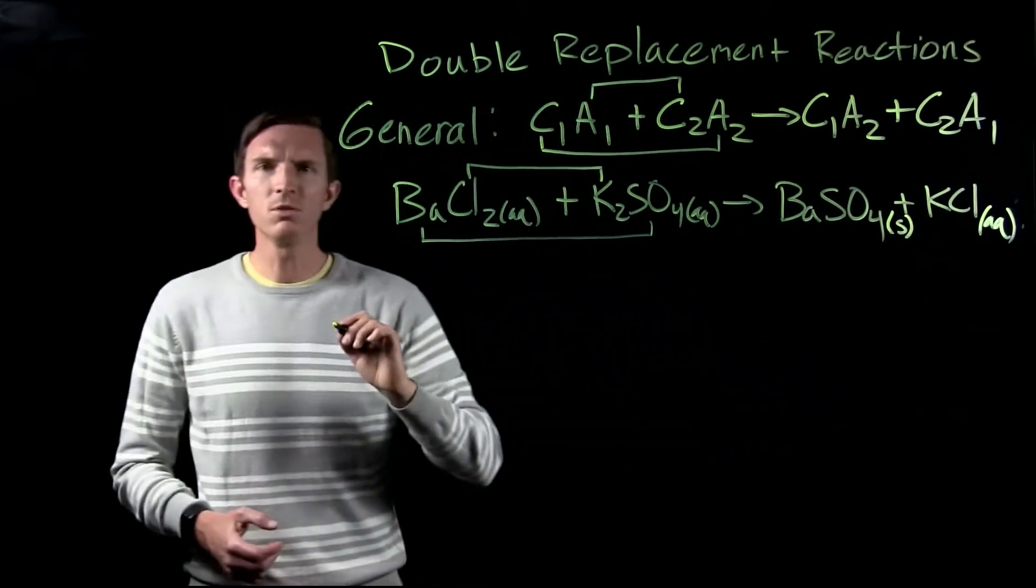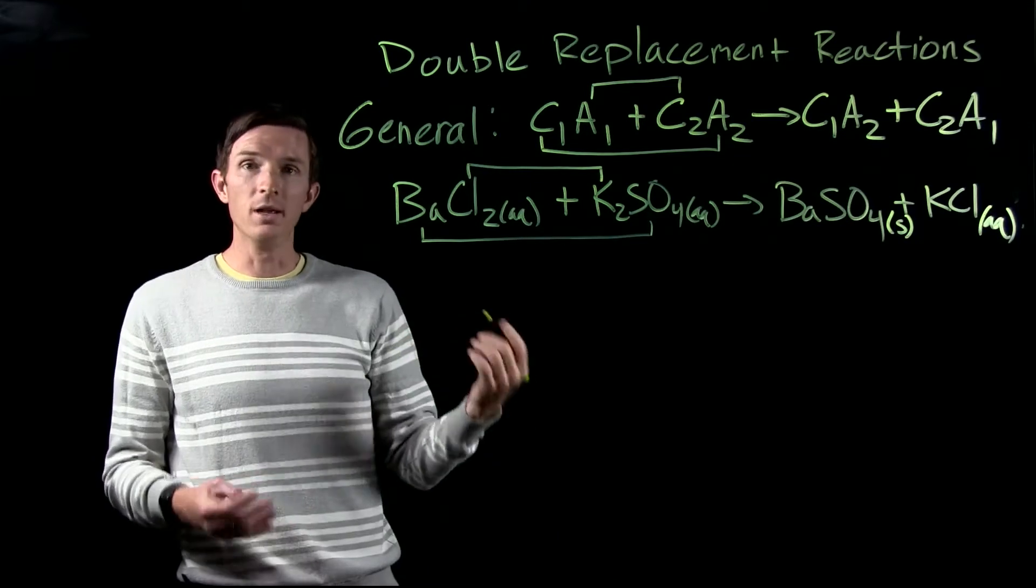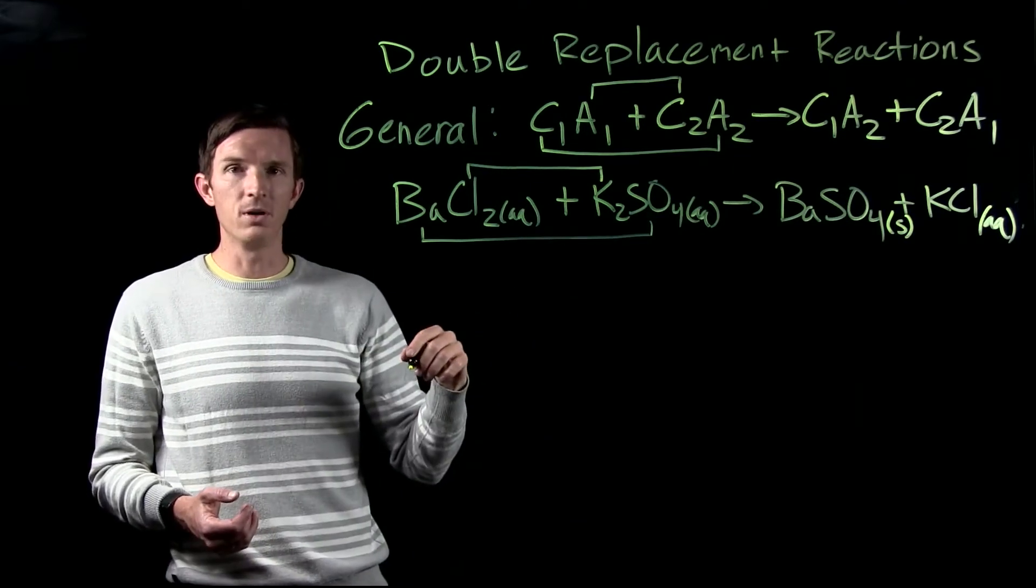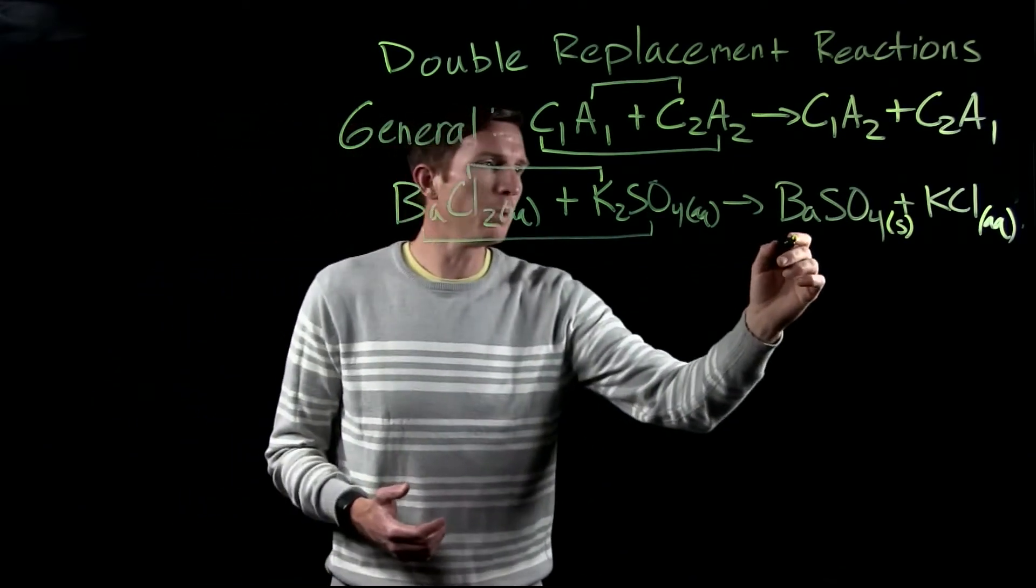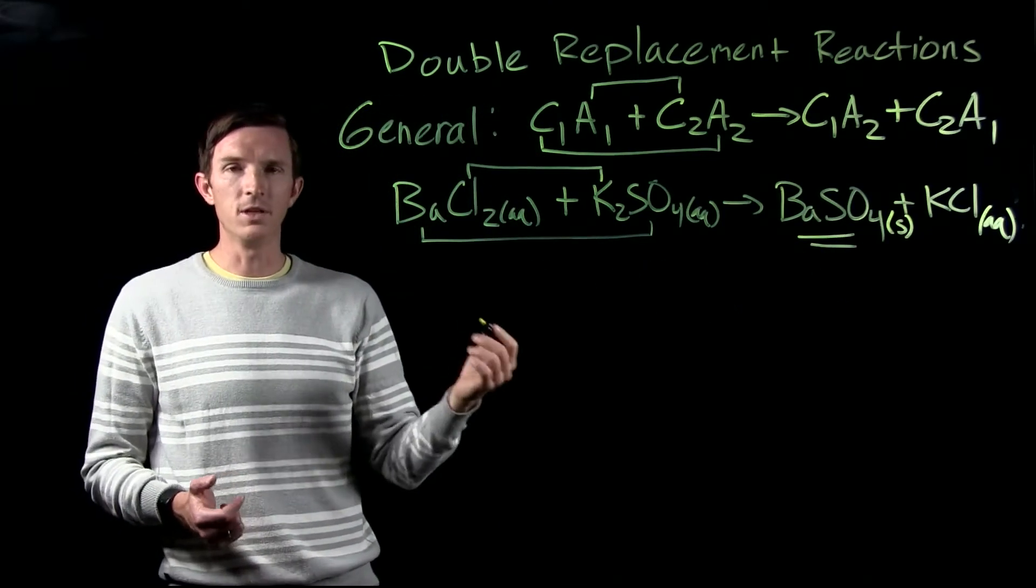Whereas our barium sulfate is going to form a precipitate. And that's because it is insoluble. So it doesn't form, or it forms this new compound that we no longer have barium and sulfate ions dissolved in solution.